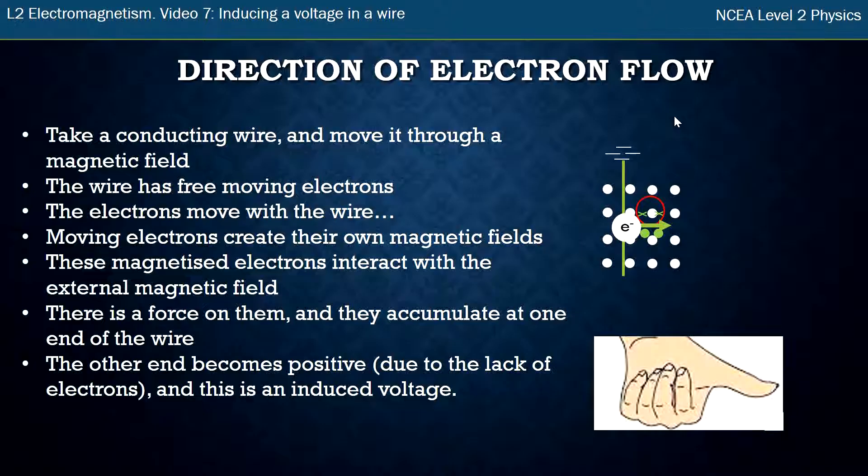And so what we get is a whole bunch of electrons sitting at the top of the wire, and that's why we're giving it the negative sign. Because there's now a lack of electrons through the rest of the wire, the bottom becomes positive. And this is your induced voltage. So you need to be able to do this to figure out which way the electrons go. It's the same process we've always done in a new situation, just using that same left-hand rule.